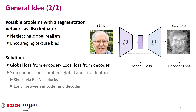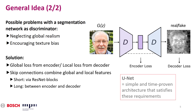Second, if you add skip connections between the encoder and decoder, as well as in the CNN blocks, then the local loss is not entirely local, but also takes information from all scales into account. That's why we propose a U-Net structure, which is conceptually simple and very popular for semantic segmentation.